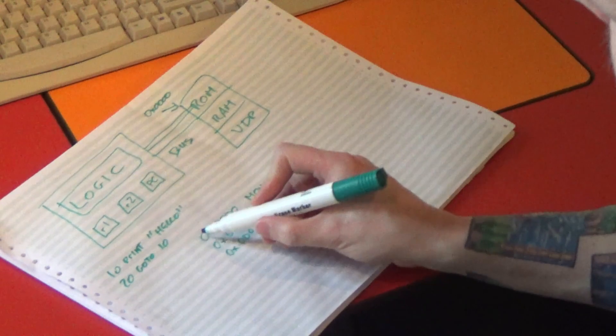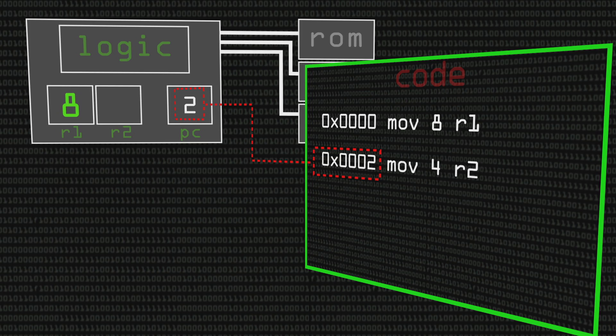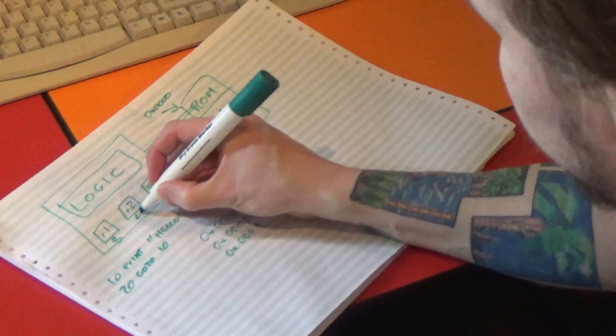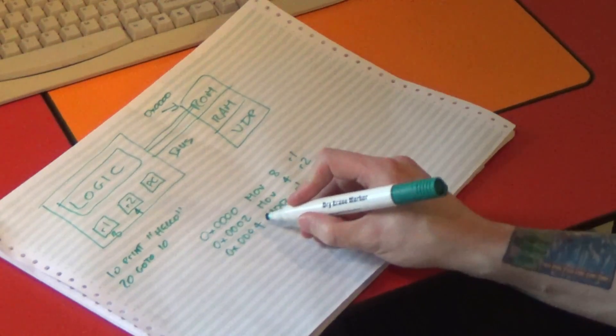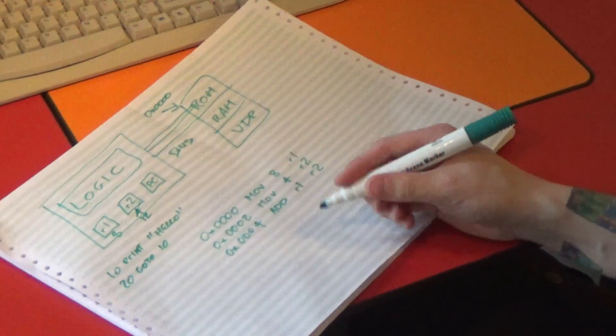So what's going to happen when the CPU starts up? It's going to initialize the PC to zero, which is address zero in the ROM where our code is. Address zero is going to move the literal value 8 into register R1. It's then going to advance the program counter to two, which is going to move the literal value 4 into register R2. Then it's going to advance the program counter to four, and that's going to add register one to register two and store the value into register two. We would expect 12 in register two at this point. Just like BASIC, using the goto command, you can jump the PC around.